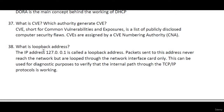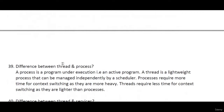What is a loopback address? A loopback address is the default address 127.0.0.1 associated with your router or network interface. We use it to check whether our TCP/IP protocols are working. Packets sent to this address never reach the network but are looped through the network interface card only.